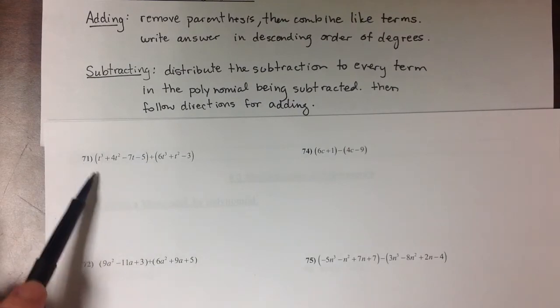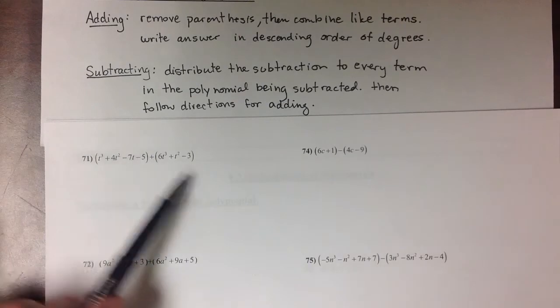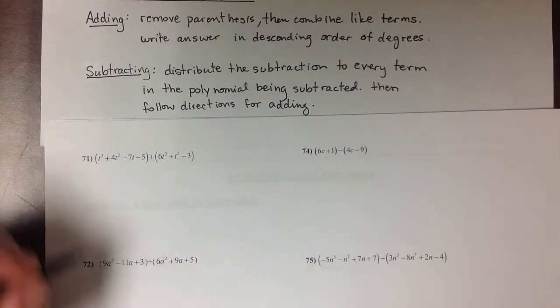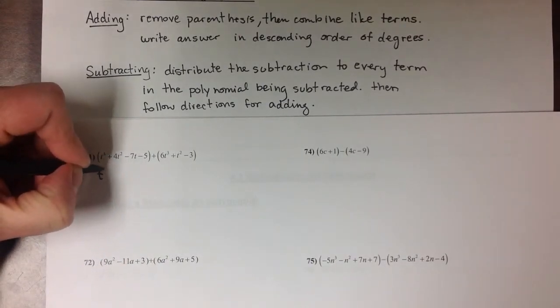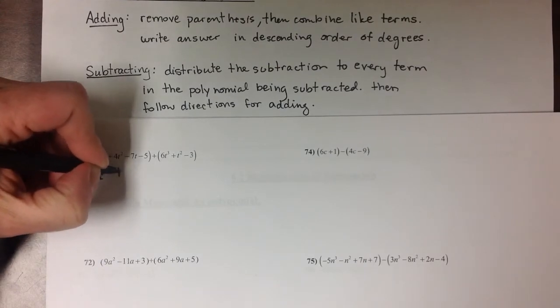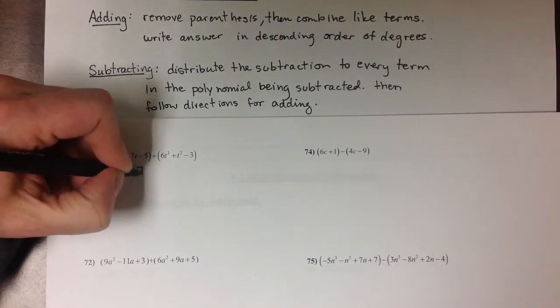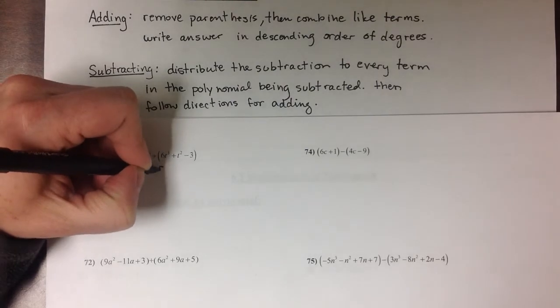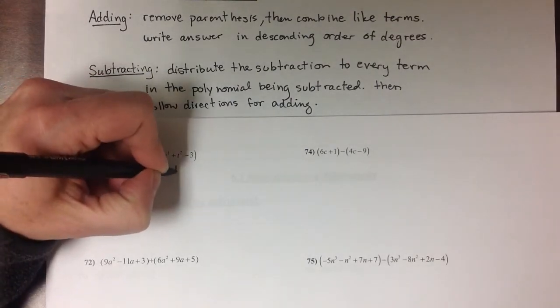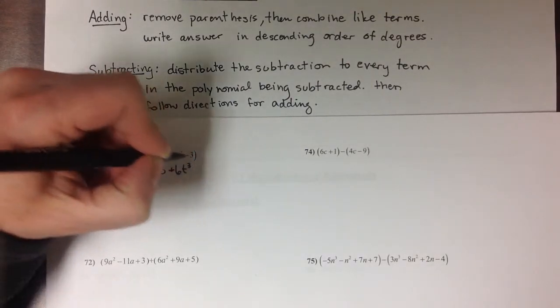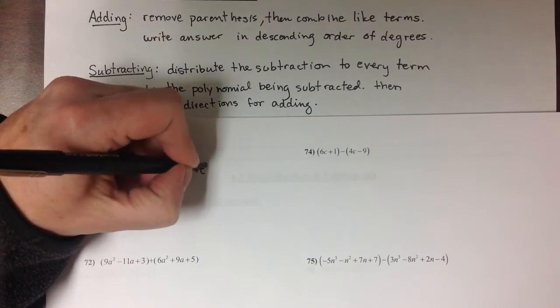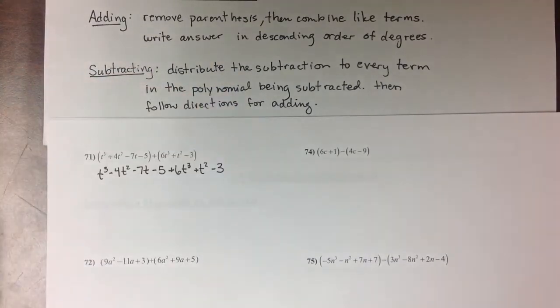So I can, because of the associative property, it's okay if I take those parentheses out so that I can regroup these terms in a different order. So I'm just going to write it as t³ - 4t² - 7t - 5 + 6t³ + t² - 3.